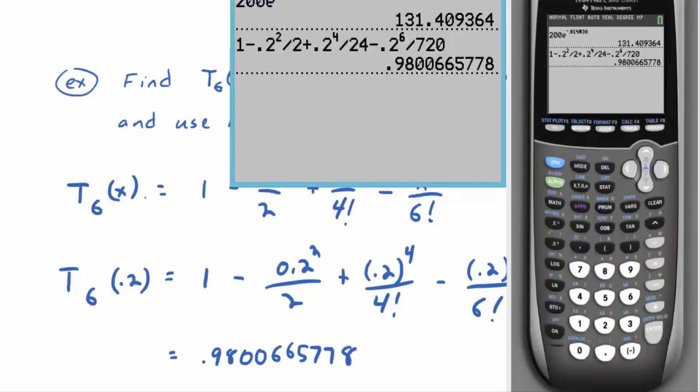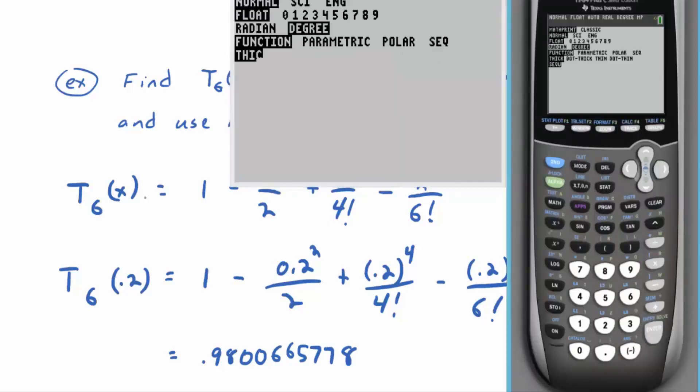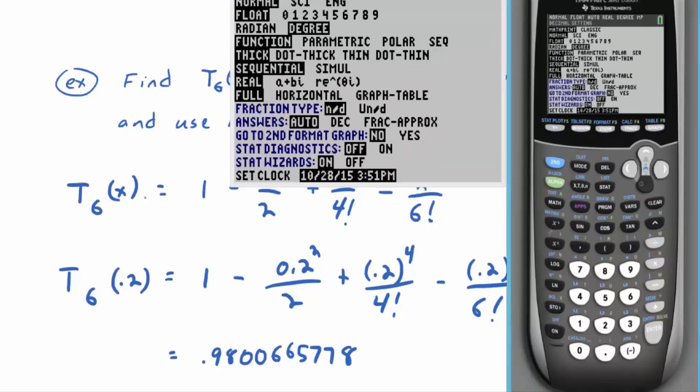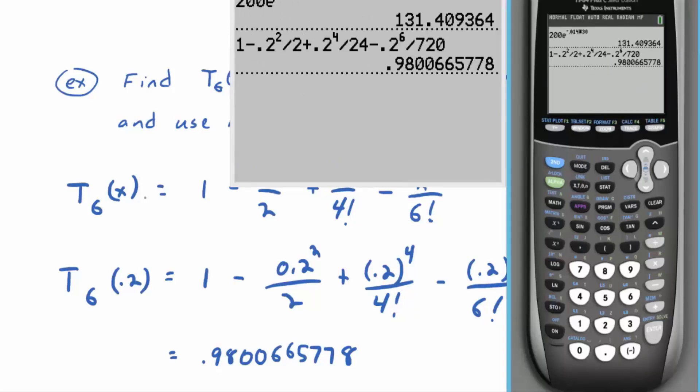Now, it would be interesting to go ahead and put in 0.2 on the calculator. Let me make sure I'm in the right mode—radian mode. Let's go cosine 0.2. Oh, wow. That's pretty good.